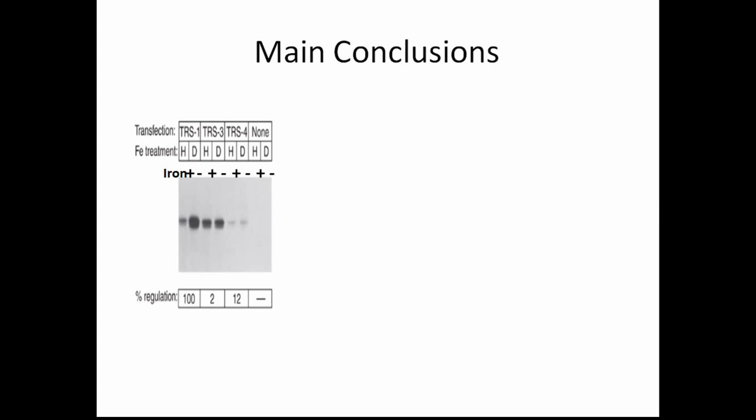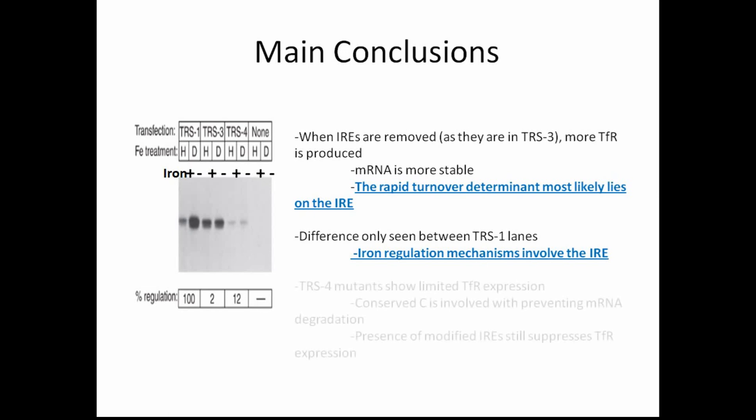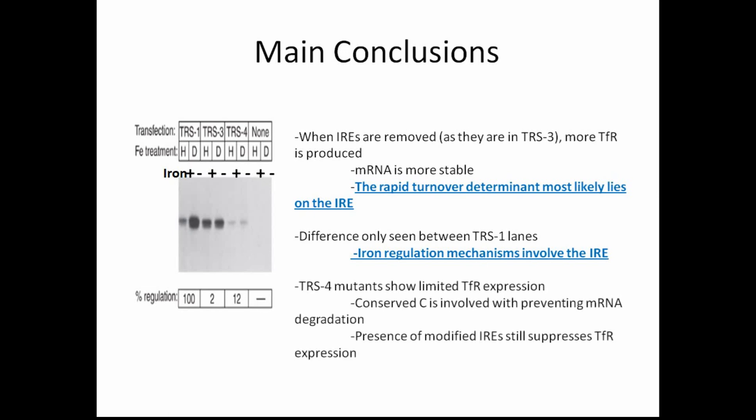When IREs are removed, as they are in TRS3, more TFR is produced, suggesting that the mRNA is more stable when IREs are removed. This leads us to conclude that the rapid turnover determinant most likely lies on the IRE. Also, the only time we see a significant difference in TFR expression between the hemin and desferioxamine groups is with TRS1, indicating that iron regulation heavily involves the IRE. Finally, TRS4 shows little TFR expression, indicating that the conserved cytosine plays an important role in TFR expression. These are some of the most important takeaways of this experiment.